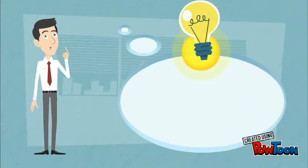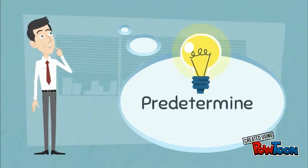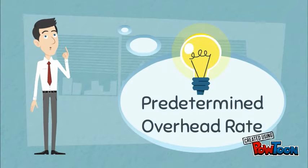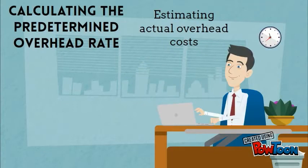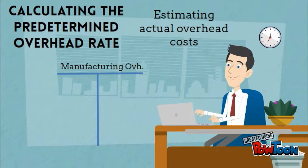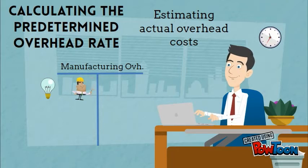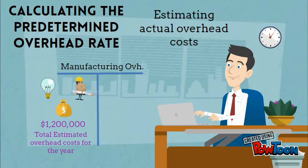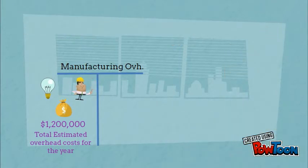The solution is the predetermined overhead rate. At the beginning of the year, management estimates all of the overhead costs that will be accumulated into the manufacturing overhead account, such as factory utilities, factory supervision, and property taxes on the factory. Let's say that those costs all add up to $1.2 million.